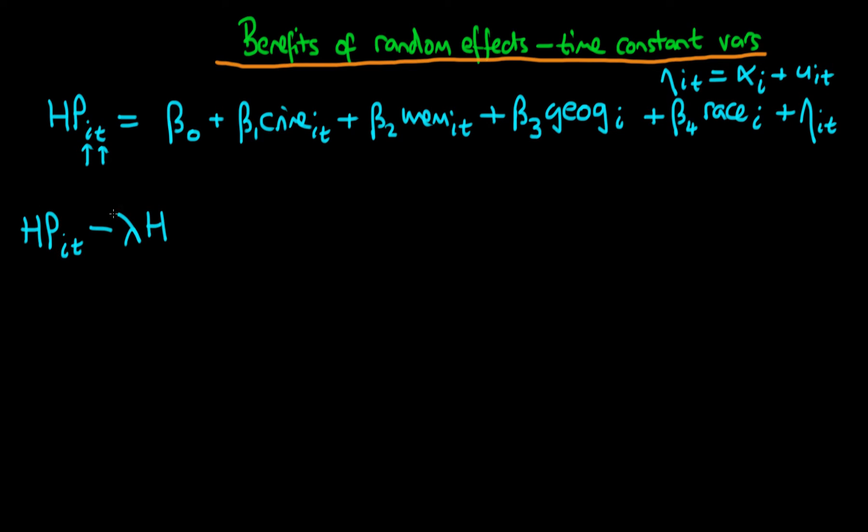So all we do is we take the original house price for city i at time t, and then we take off the time mean of the house price times this parameter lambda. And seeing as I've done that to the left-hand side, I need to do it to the right-hand side as well.